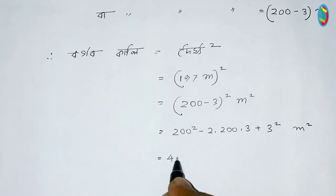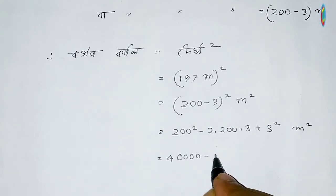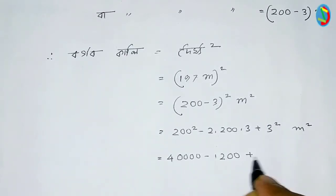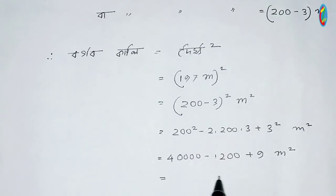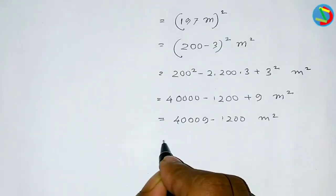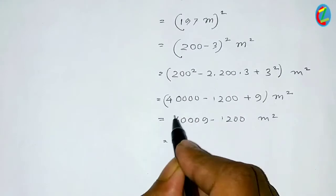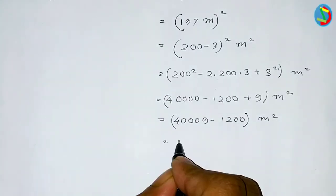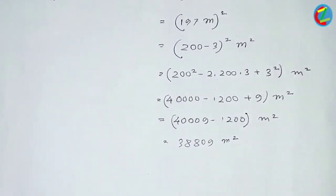We are going to do 2 squared. So let's have a minus 3. We are going to compute m squared and 2 squared, and the answer is 3800 meter squared.